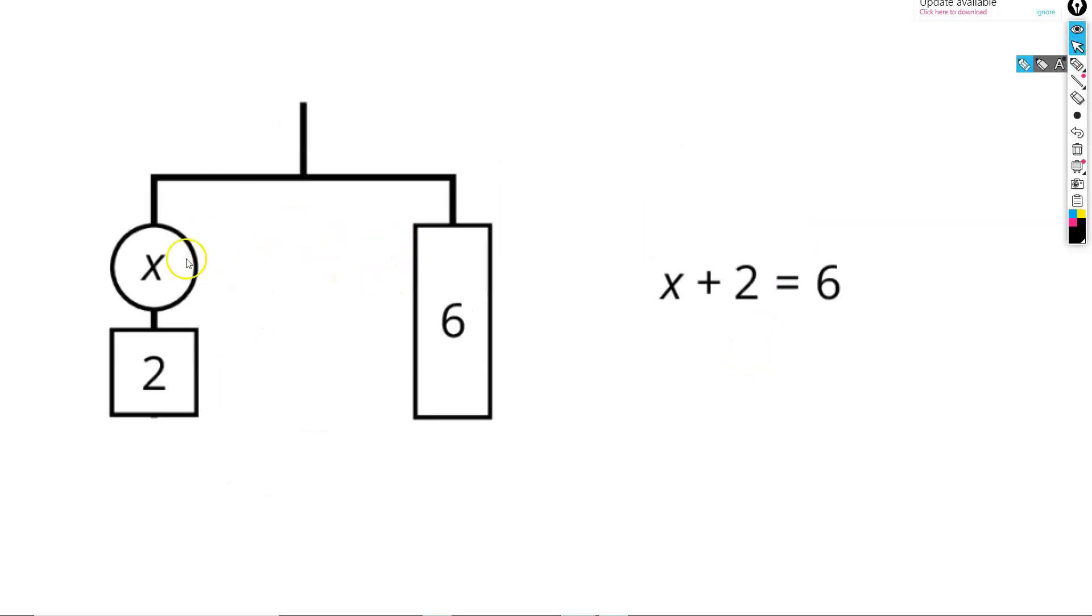This leaves us with 1 set of x plus 2 on the left side, and 1 third of 18, or 6, on the right side.